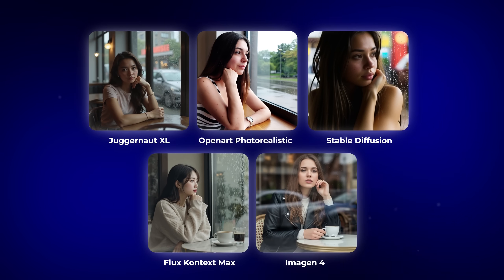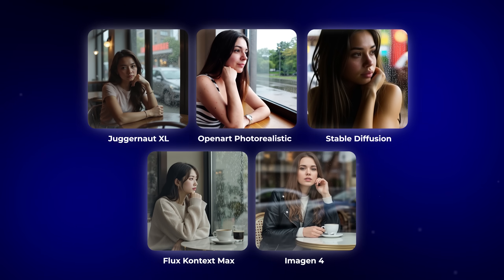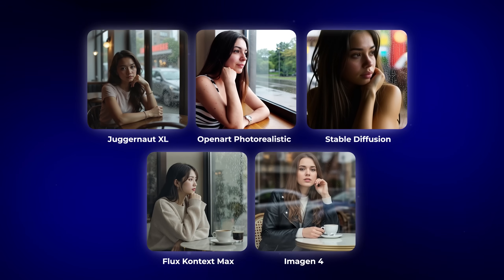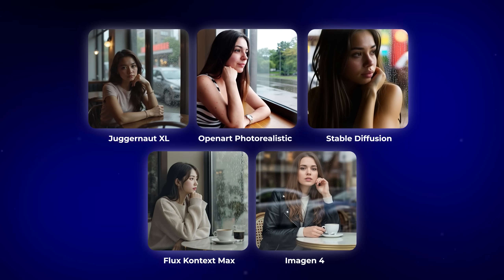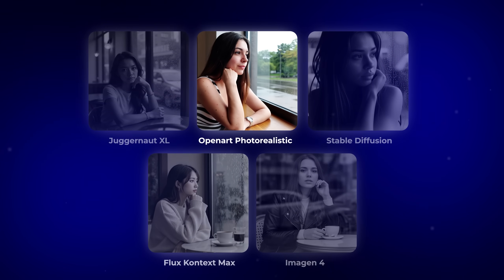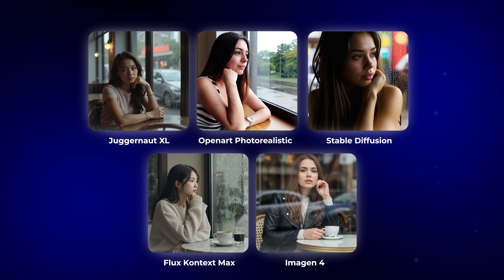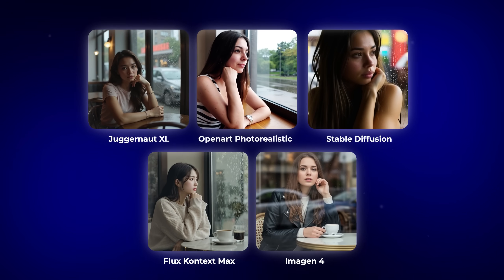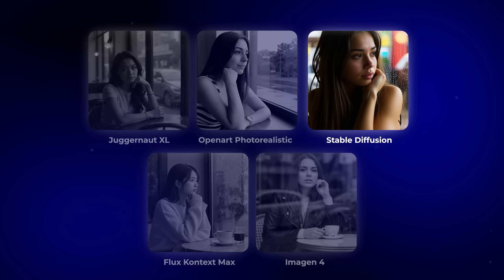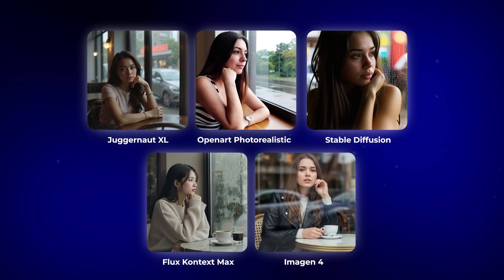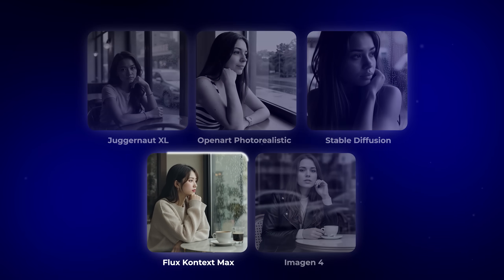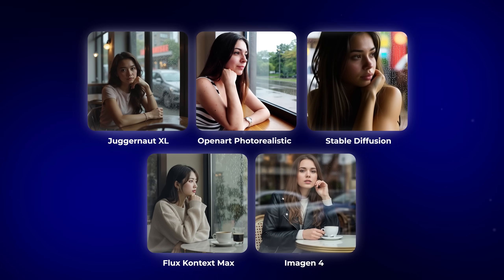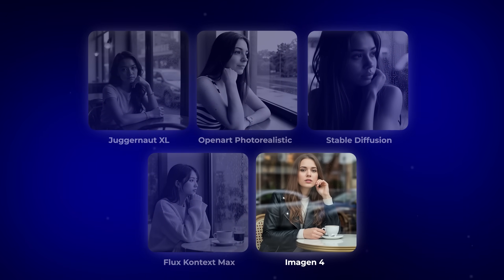On screen right now you can see all of the universal results side-by-side, so you can see for yourself how each model handled the exact same test. From that we can clearly see the differences: if you want casual-looking images, OpenArt Photorealistic is the model to go for. For a professional cinematic shot, Juggernaut XL is the one you'll want. For something more creative and stylized, Stable Diffusion nails it. When it comes to editing assets, product shots, and ad mock-ups, Flux Context Max is unmatched. And if you want super-real photos with flawless lighting and professional-quality text, Google Imagen 4 is the model to go for.